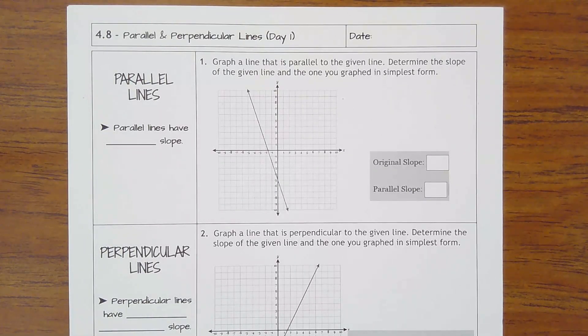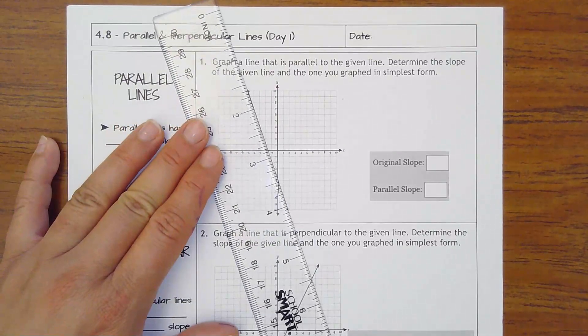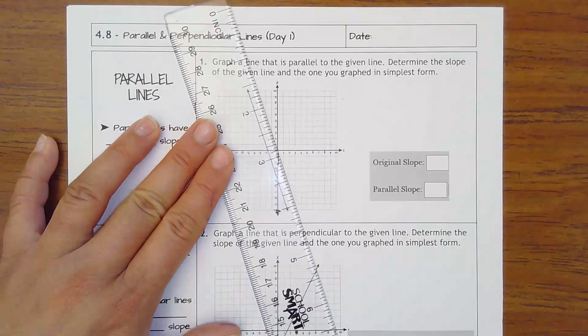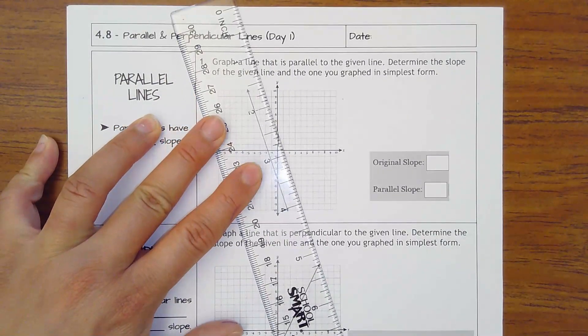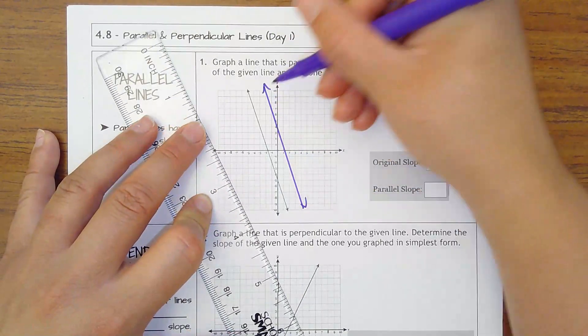You're going to have some problems that say graph a line that's parallel to the given line. Determine the slope of the given line and the one you graphed. So I'm going to use a ruler to help me here. Here's this line. If I wanted another one to be parallel, let's say it's something like this. Looks pretty good.